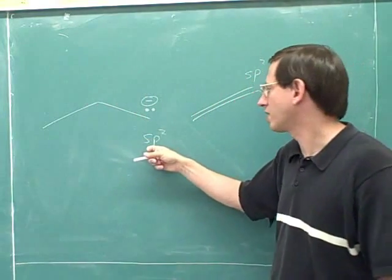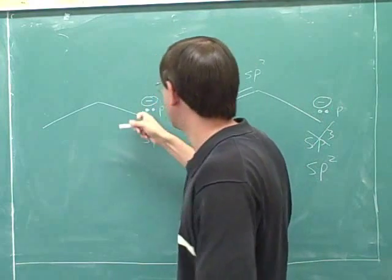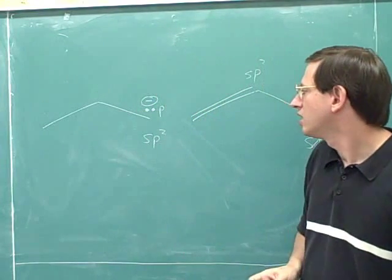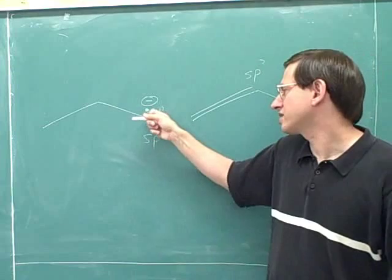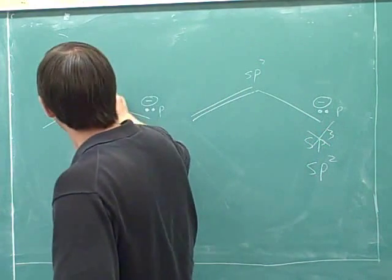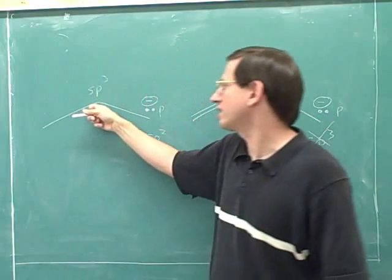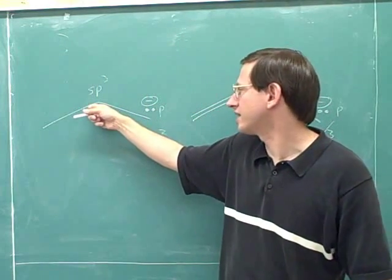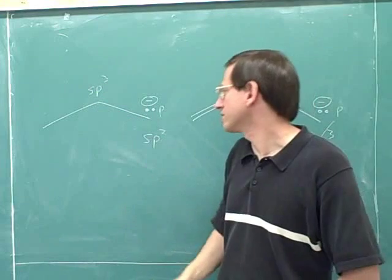Even if this carbon were sp2 hybridized, well then it would have a p orbital that it can put its lone pair in, but it wouldn't get any overlap, side-to-side overlap with the p orbitals, because there's no p orbital over here. This carbon over here is sp3 hybridized atom. It doesn't have any p orbitals.